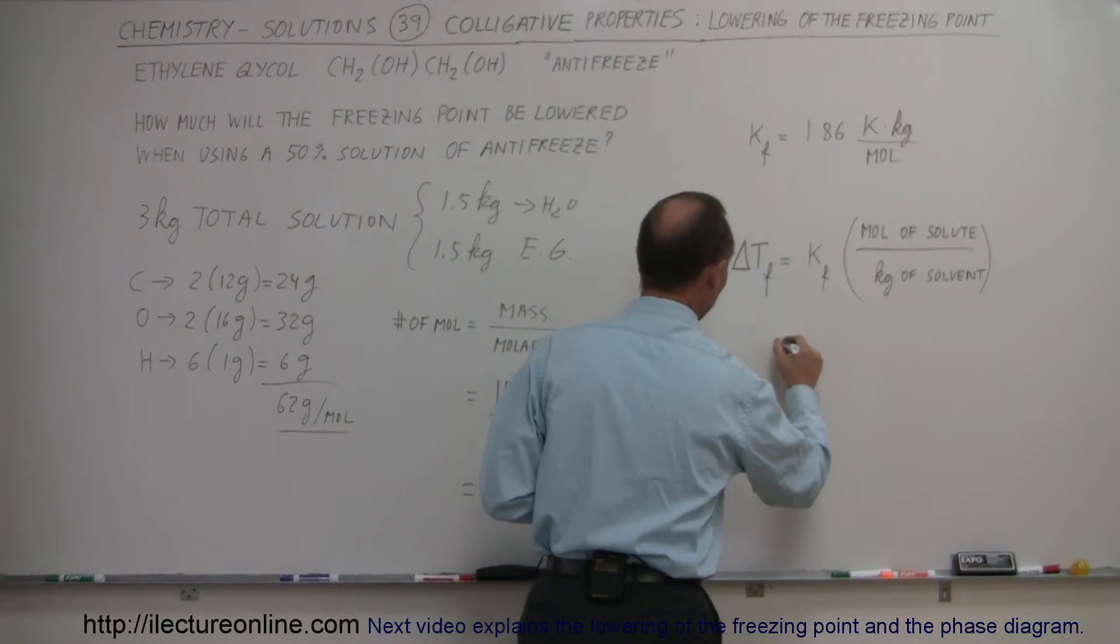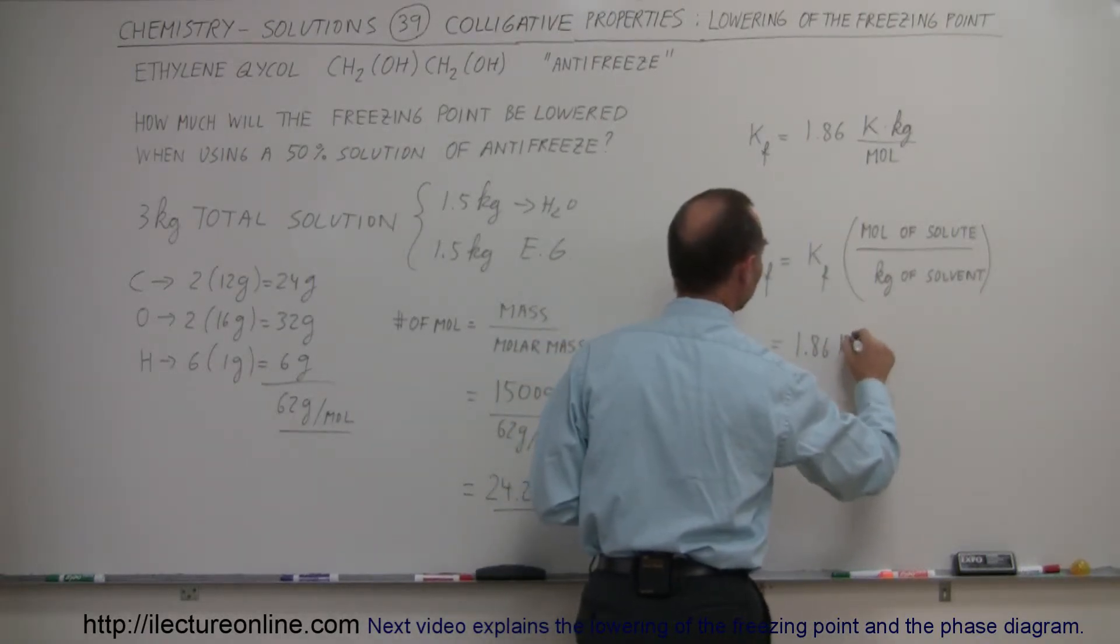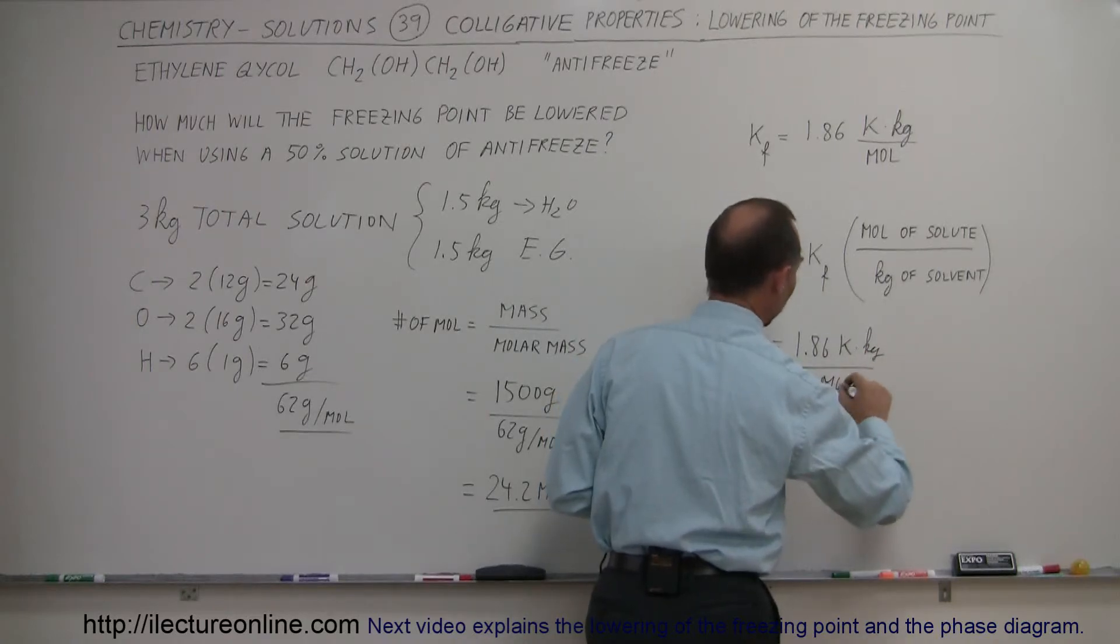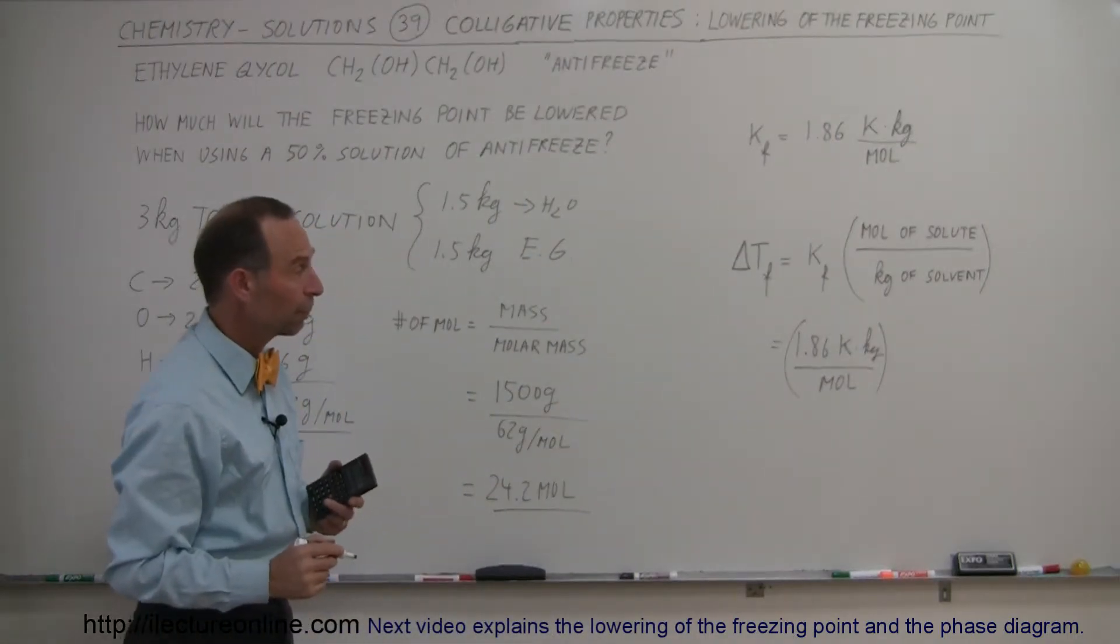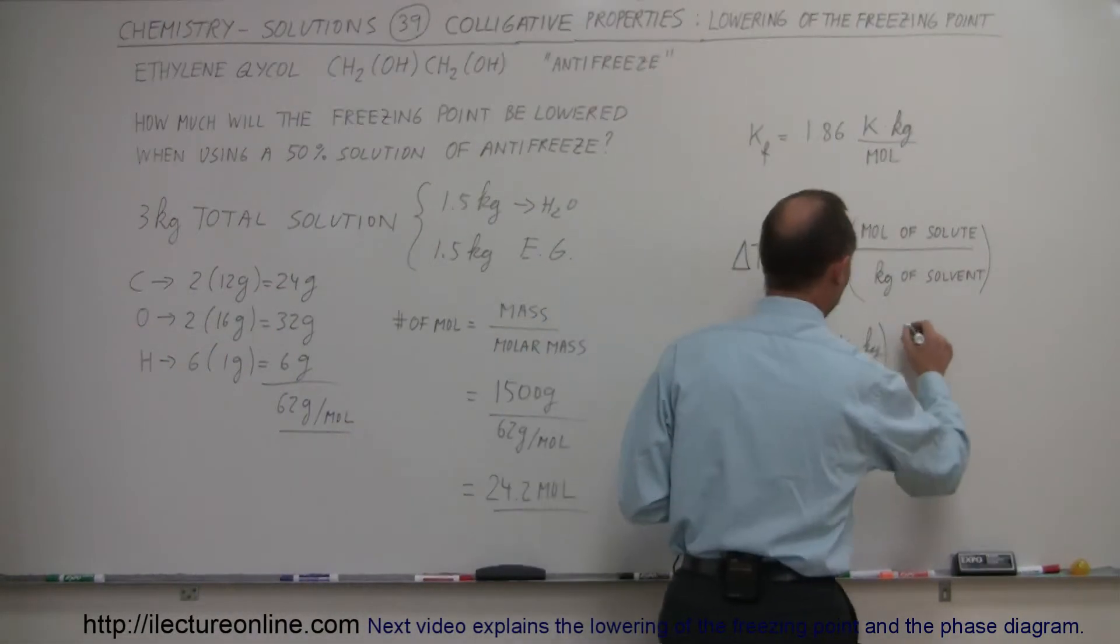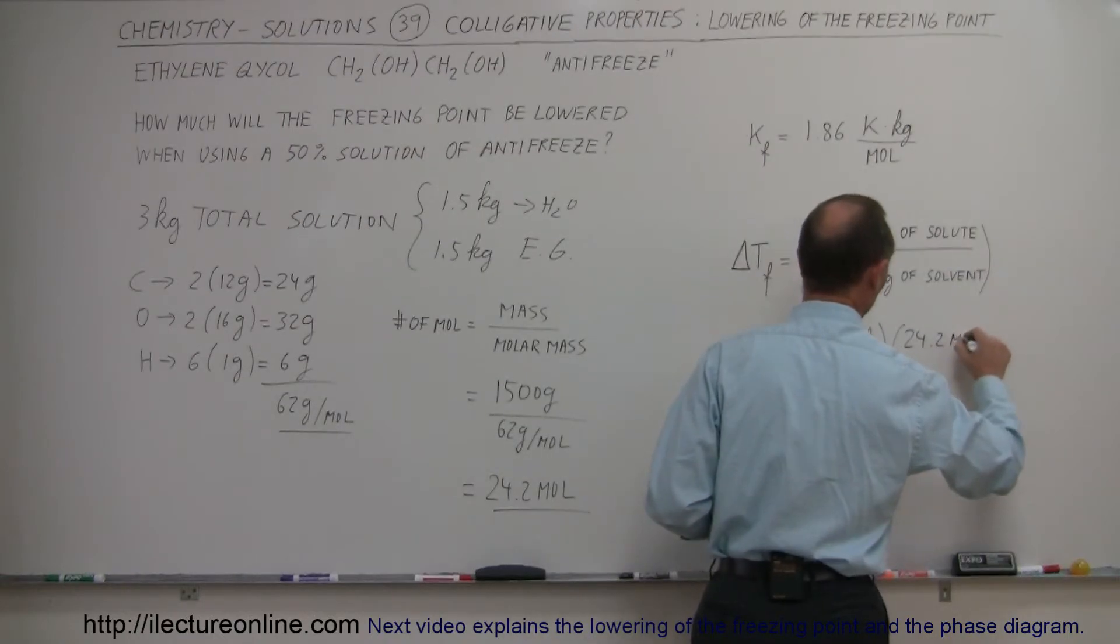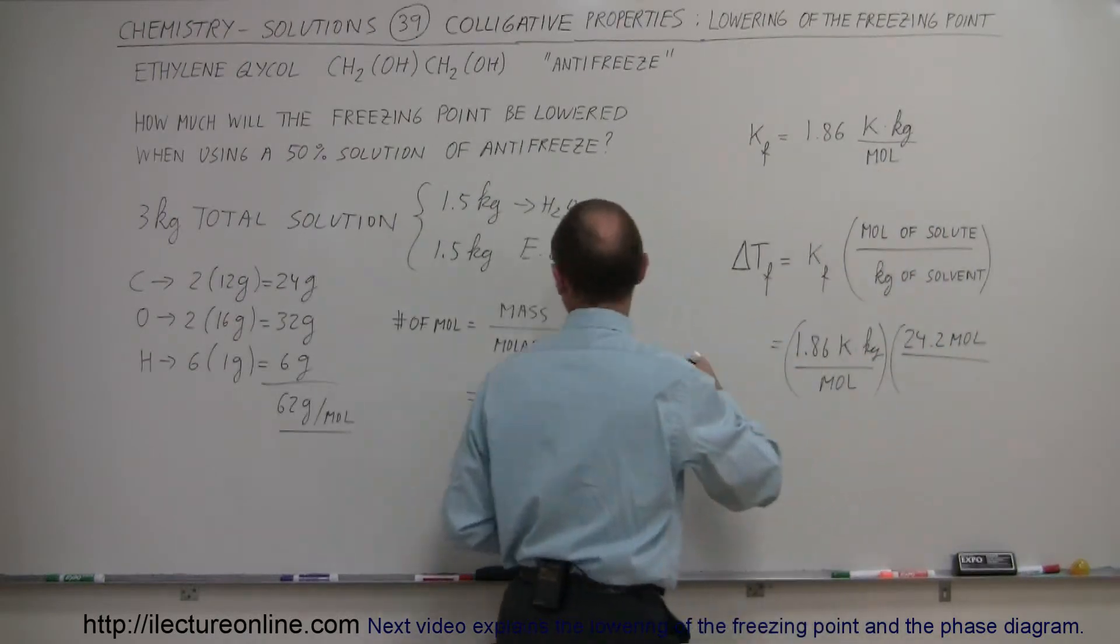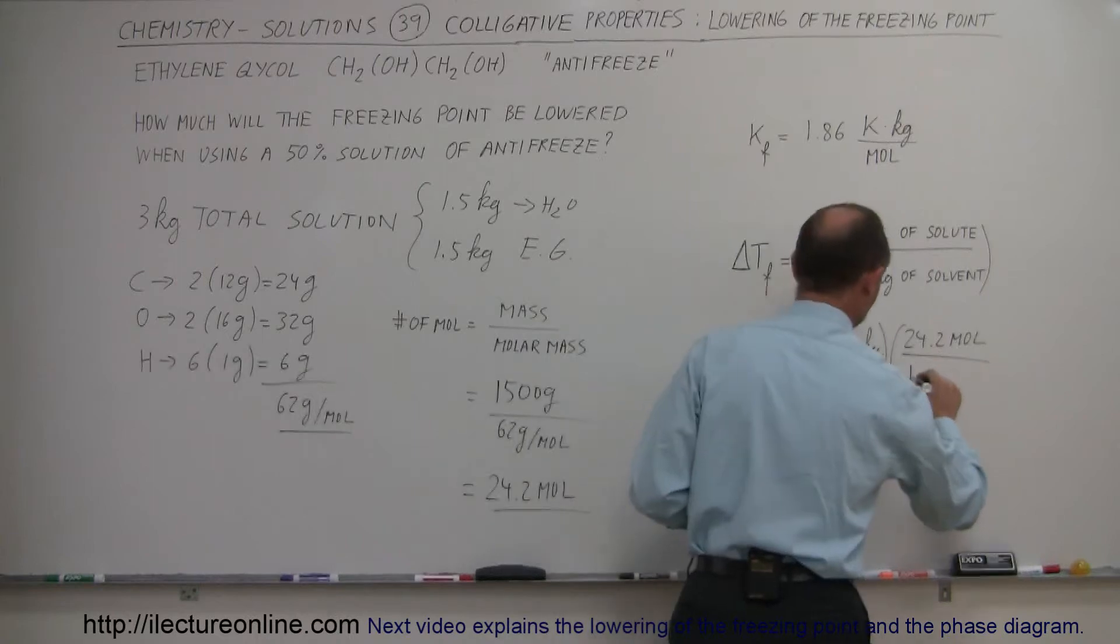Let's plug in the numbers that we have now. The K would be 1.86 Kelvin times kilograms per mole, so that for every mole added to one kilogram of water it will lower the freezing point temperature by 1.86 degrees, times the number of moles of the solute, which we found to be 24.2 moles, divided by the kilograms of water, which would only be 1.5 kilograms.